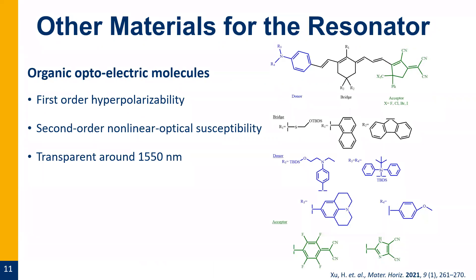Moving on: if ITO doesn't work out, other materials we're interested in are organic electro-optical molecules. Due to their three-part structure — electron donor, highly conjugated bridge, and electron acceptor — they have first-order hyperpolarizability, beta, by themselves, and a high second-order nonlinear optical susceptibility, chi-squared, in the bulk. They're also transparent where needed. A really cool part of this molecular system is that it's easily modified — we can change the R groups to reach chi-squared values we're looking for.